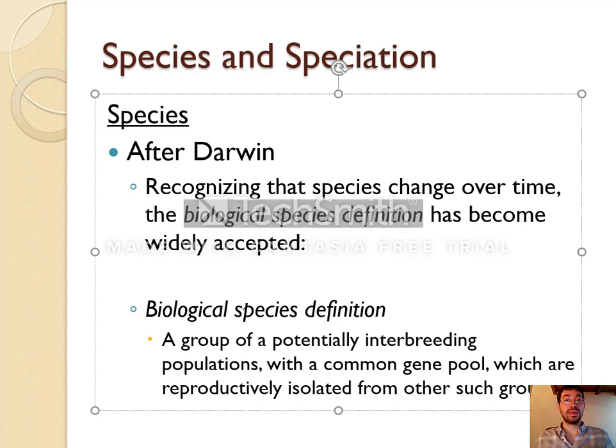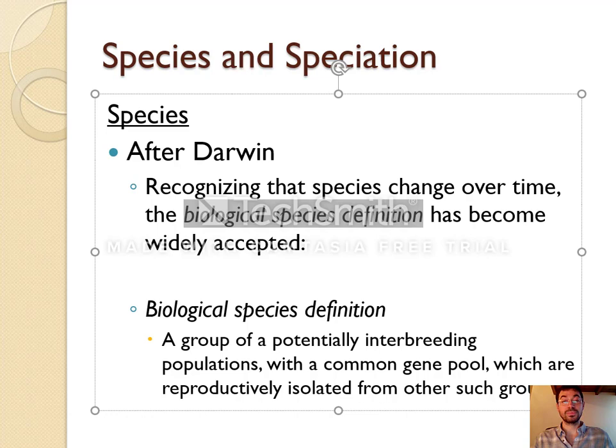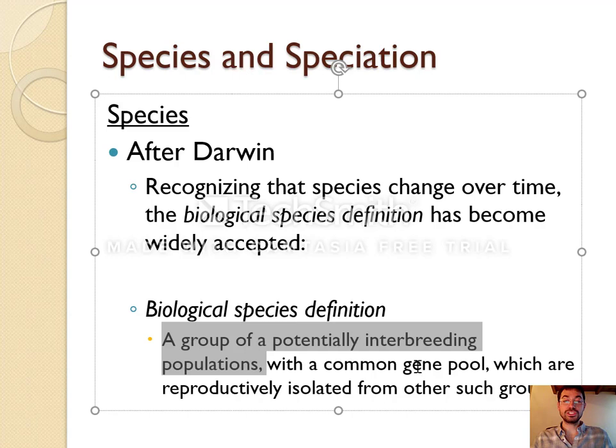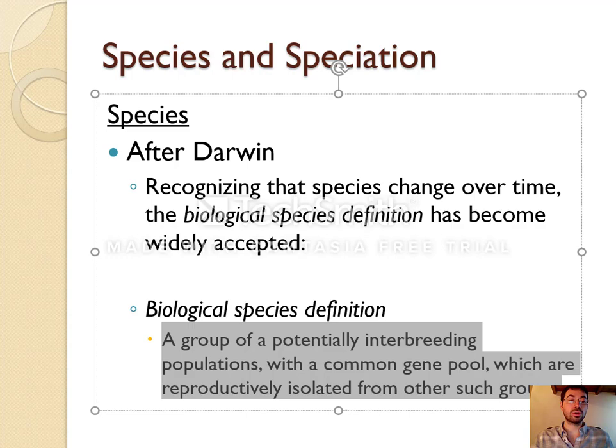For example, silverback male gorillas are over twice as big as female gorillas. Today, the definition of species is any group of organisms that are capable of breeding successfully. If they can breed successfully — if they have the same gene pool — they are the same species. There are some problems with this definition: some very similar species cannot interbreed even though they look very similar, and some species that look very different can interbreed.